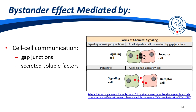Bystander effects depend on communication between cells. A signal is sent from a directly irradiated signaling cell and received by a receptor cell that did not receive any radiation, which then triggers a biological response. The bystander effect is mediated by two main forms of communication: gap junctions, where two adjacent cells communicate through a tunnel-like opening allowing movement of molecules, and secreted soluble factors through paracrine signaling, where molecules diffuse into neighboring cells in the close environment.